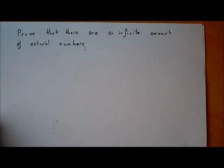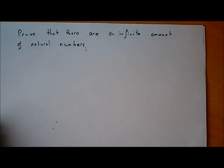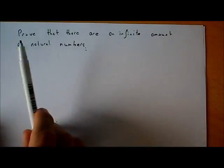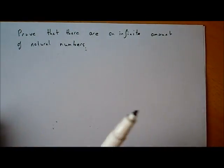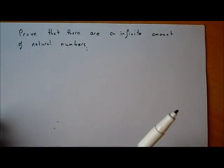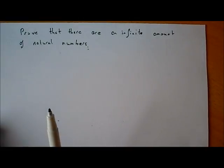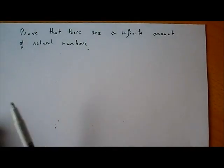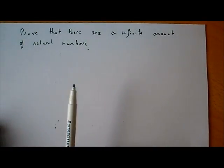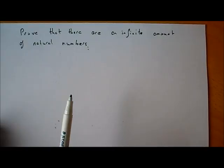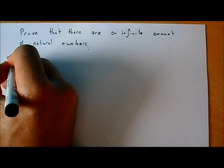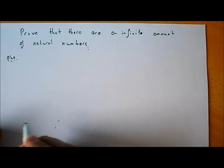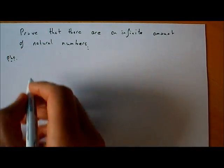Let's have a look at a few examples of proof by contradiction. In this one, we're going to prove that there's an infinite amount of natural numbers. It's obvious there is an infinite amount of natural numbers, but that's not good enough in maths — we have to be able to prove it. So we're going to use a proof by contradiction, PBC.